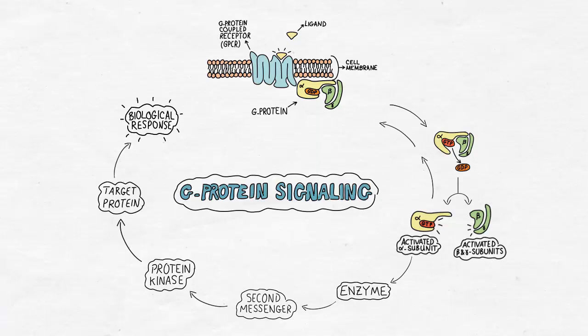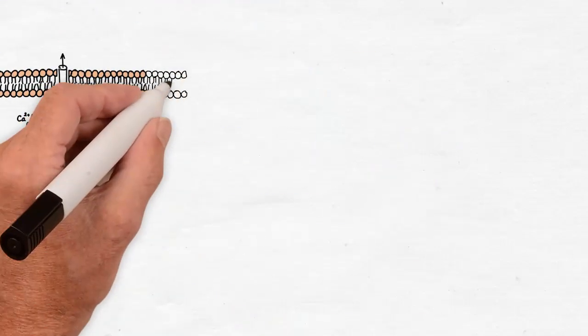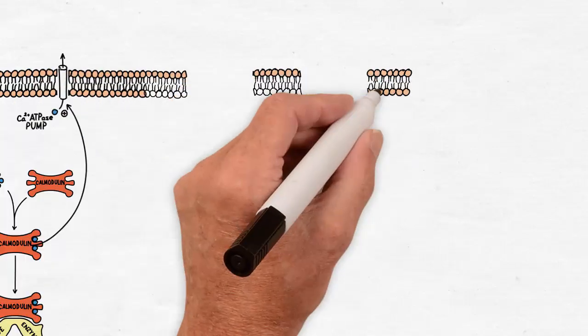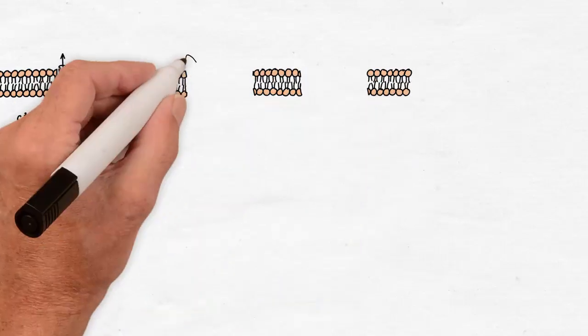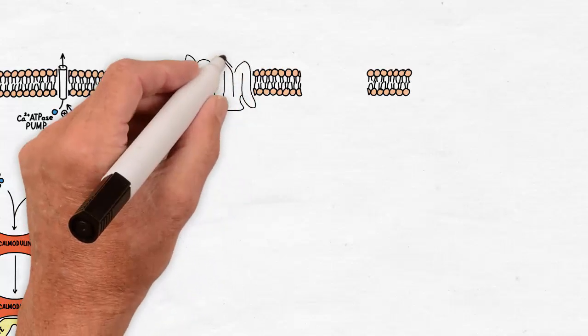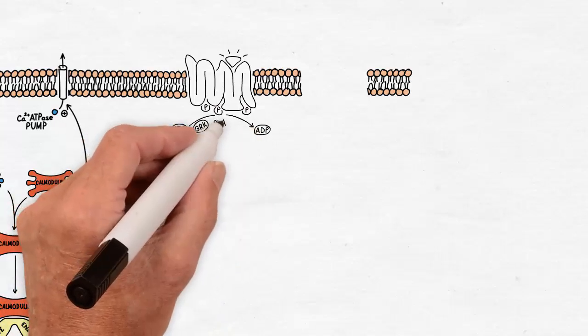Also, another mechanism by which the GPCR firing stops is the inactivation of the receptor itself. When GPCR activates the G protein, it activates at the same time a GPCR kinase or GRK.